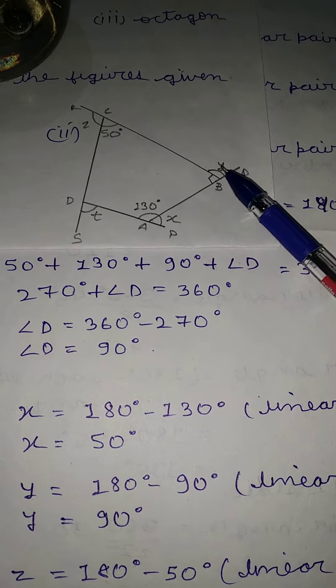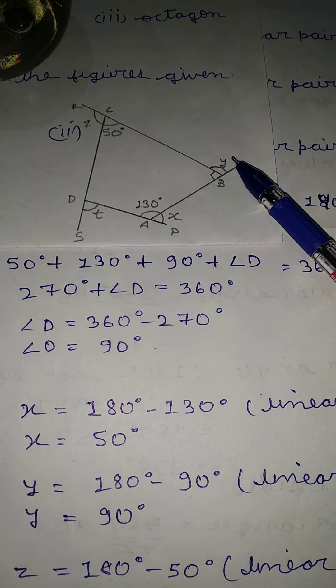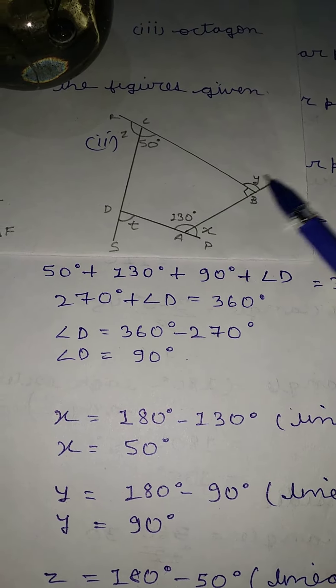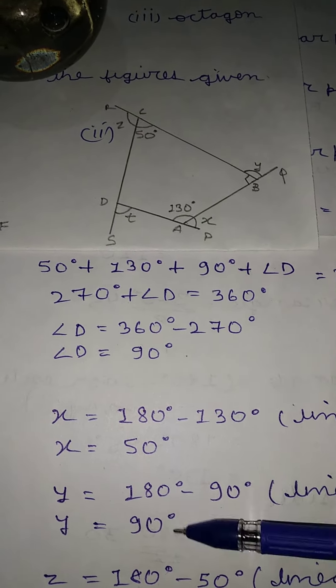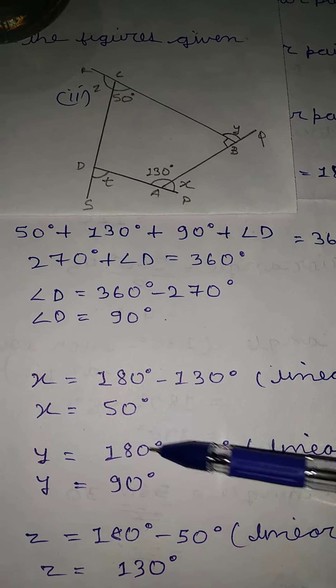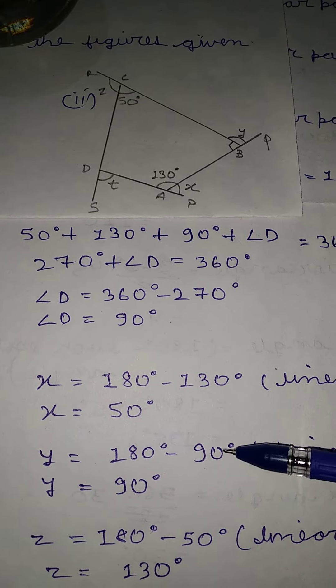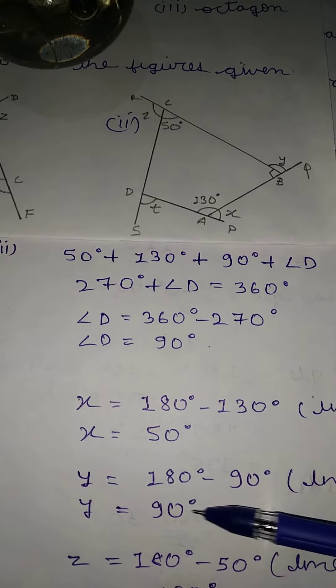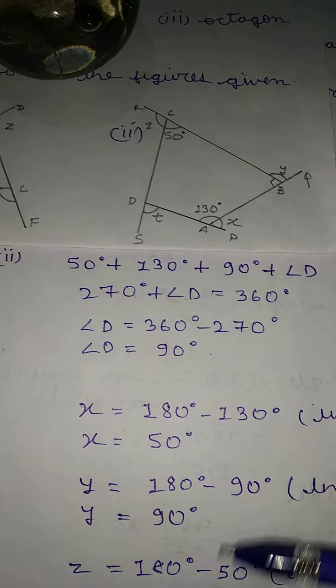Now we find y. This is also a linear pair, so y is equal to 180 minus 90 degrees, which gives us y is equal to 90 degrees.